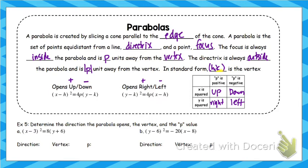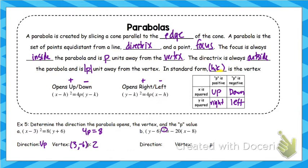Let's determine direction, vertex, and p value. For the first one, x is squared and p is positive, so this opens up. The vertex: look at the x term, use opposite sign; look at the y term, use opposite sign. Then 4p equals 8, so p equals 2. For the second one, y is squared and p is negative, so it opens left. The vertex x-coordinate is 8 and y-coordinate is 6. Then 4p equals negative 20, so p equals negative 5.